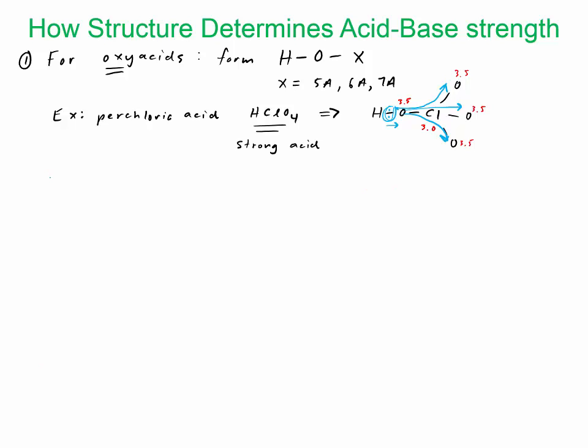Those are the two things we want to look at: the electronegativity of whatever X is, and the number of oxygens attached on the acid.